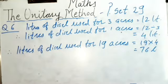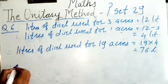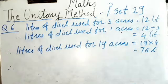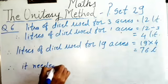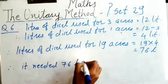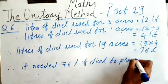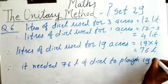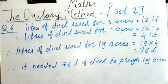This way we can find from many to 1 and 1 to many. So to plough 19 acres of land, the tractor needs 76 litres of diesel. Therefore, the final answer: 76 litres of diesel is needed to plough 19 acres.